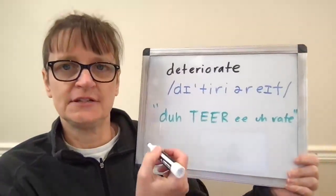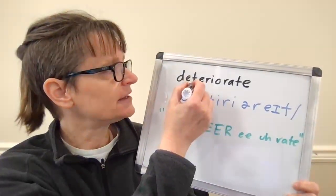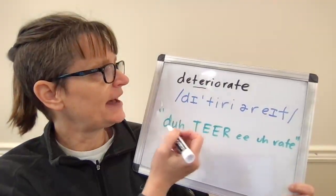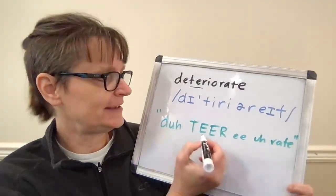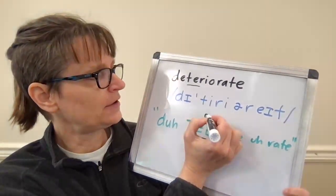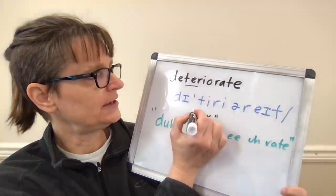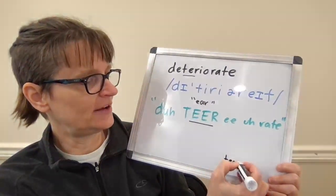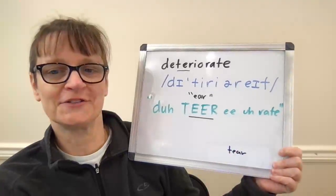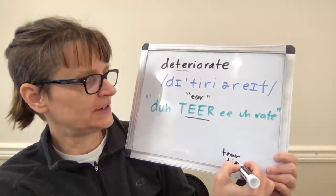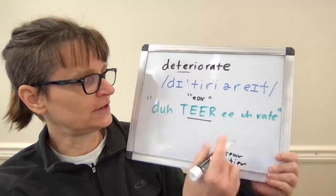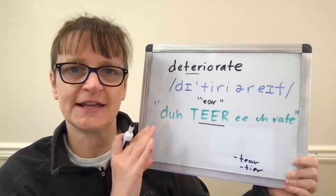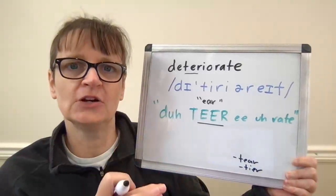The main stress in deteriorate is on the 'tear' syllable, and even though we have the letters ER here, we have the EAR diphthong. You can think about it like the word 'ear' or the word 'tear.' We also have the word 'tier' — spelled differently — but I've written it here with two E's just so you know it has that tense E-EAR sound.